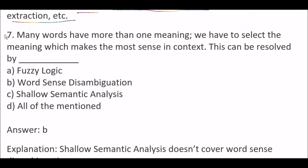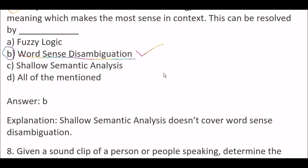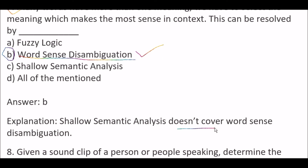Next question: many words have more than one meaning; we have to select the meaning which makes the most sense in context. This can be resolved by — Options: A) Fuzzy logic, B) Word sense disambiguation, C) Shallow semantic analysis, D) All of the mentioned. The right answer is option B, word sense disambiguation, because shallow semantic analysis doesn't cover word sense disambiguation.